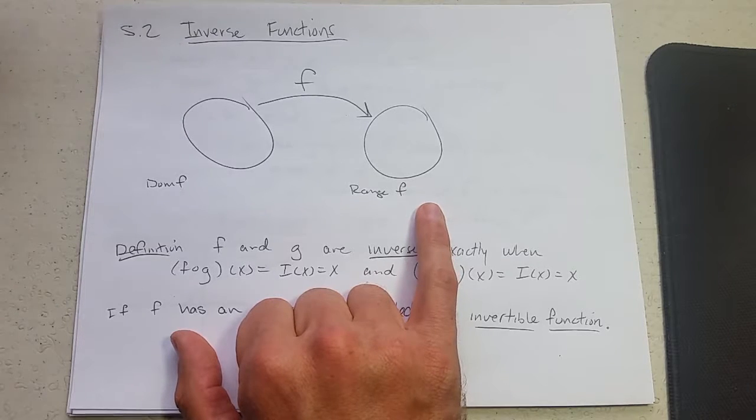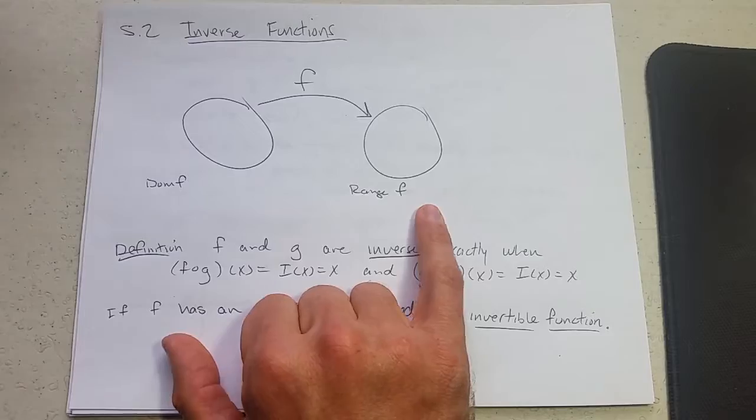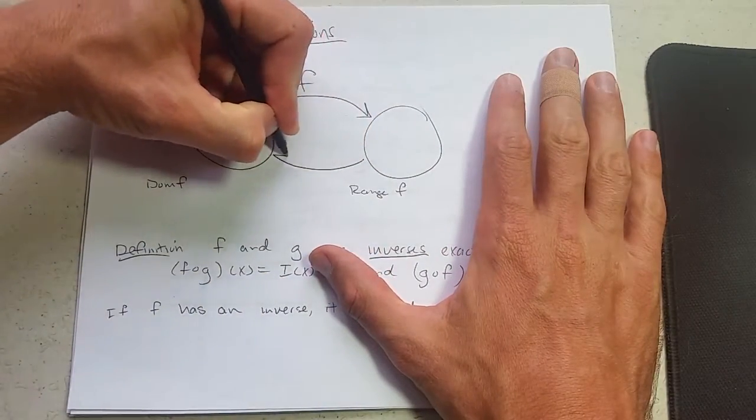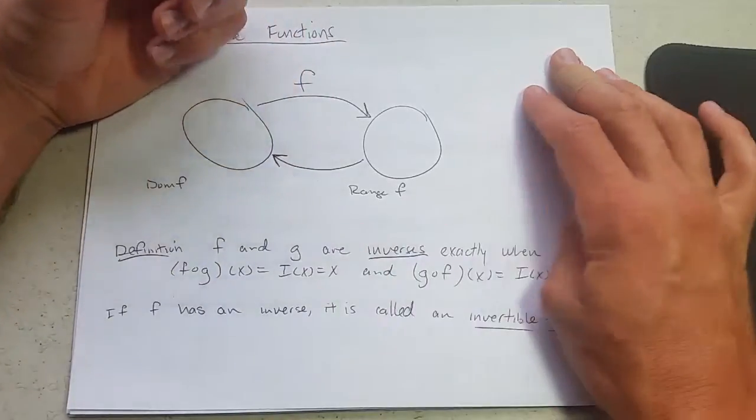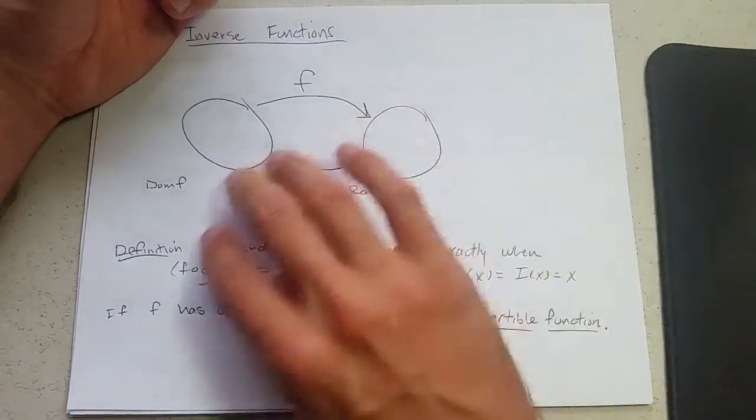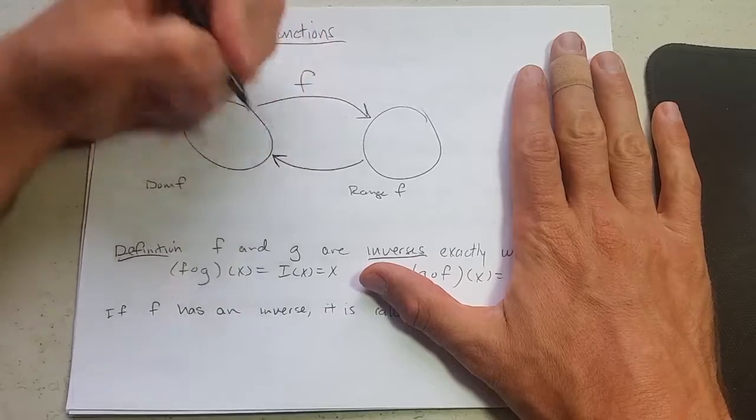An inverse function, the best way to think about it, is it turns the arrow around. So this arrow would go the other way, from the range of f to the domain of f.